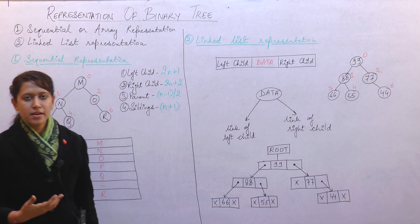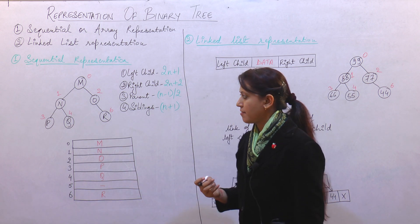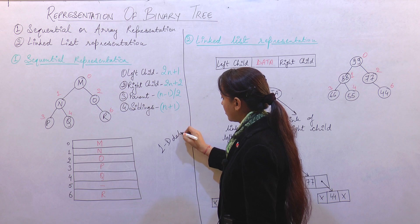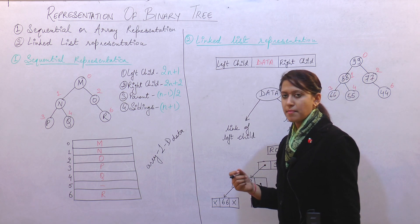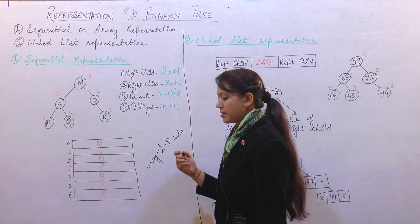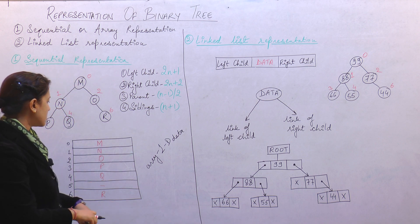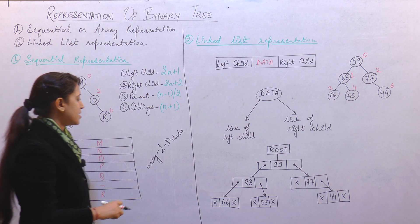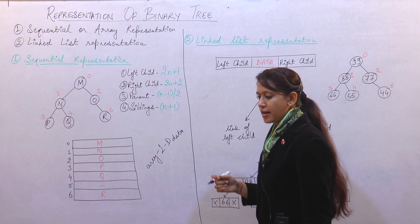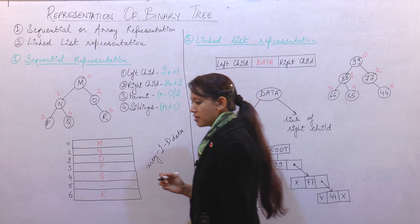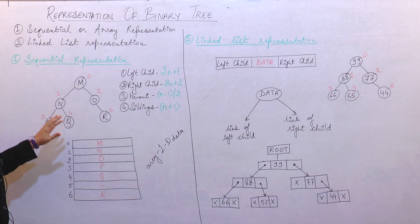Since from the start, we have always been studying that array is mainly used to store one dimensional data into memory. So array representation or sequential representation of a tree uses an array to store the nodes of the tree. The nodes present in the tree are represented using an array in sequential form, and that array uses one dimensional data.